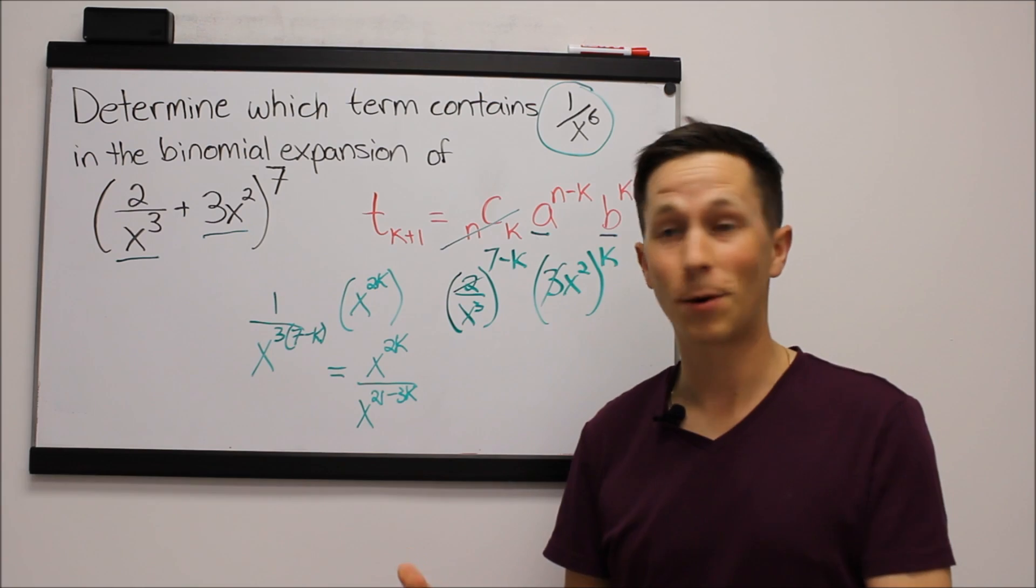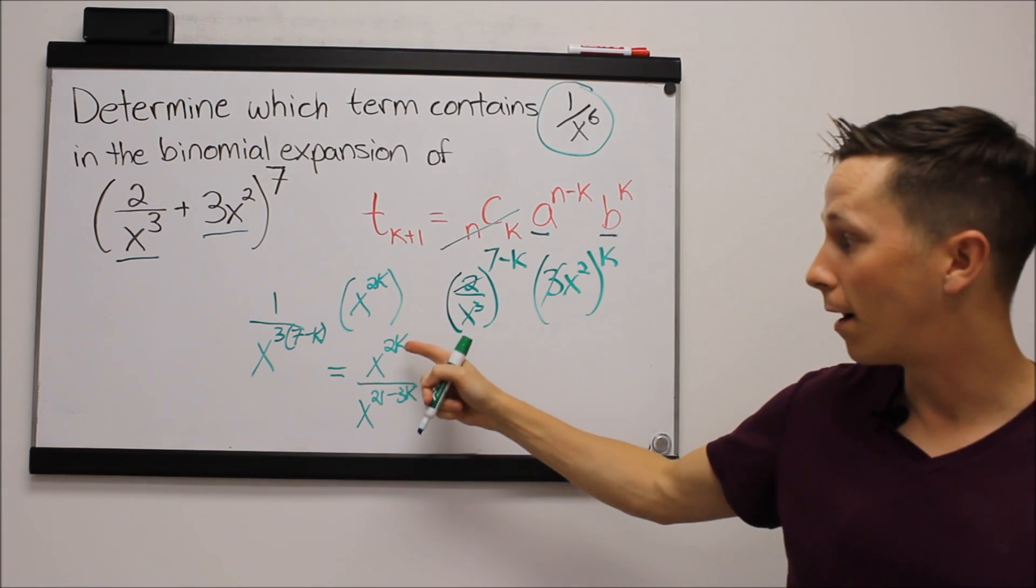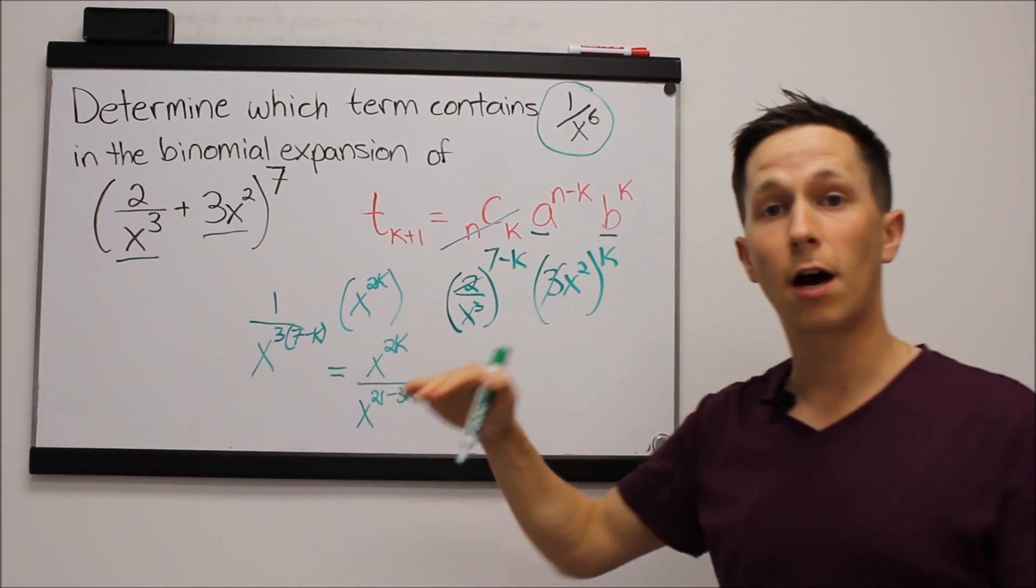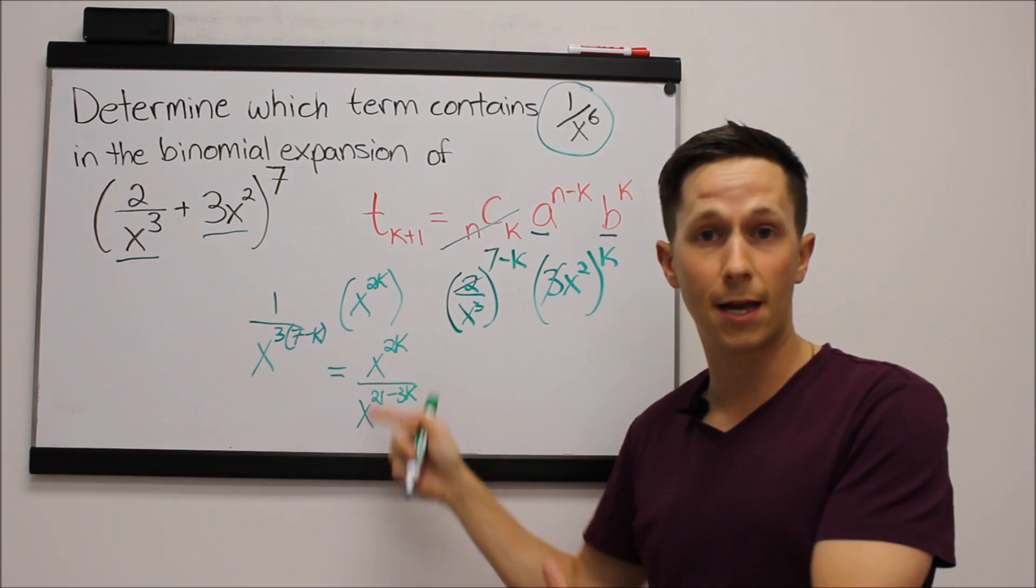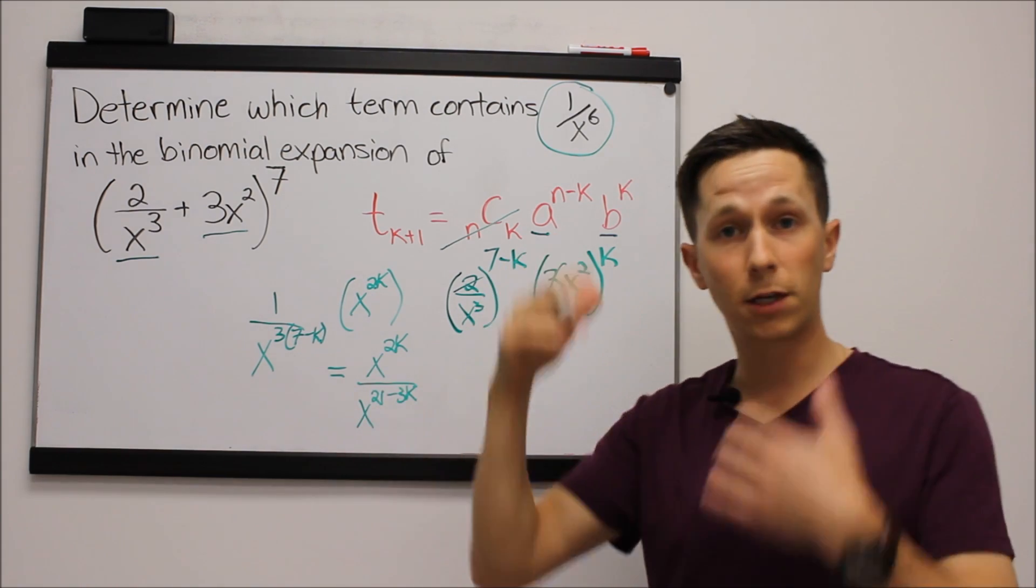Last thing to do with the exponent is when we have an exponent on top, exponent on the bottom, and the base is the same, which they are—they're both x's—we can just subtract.